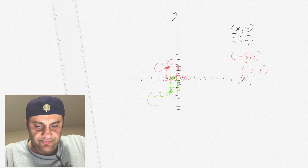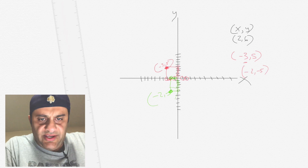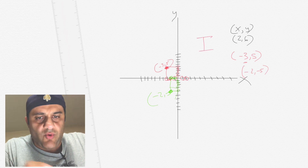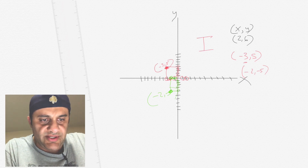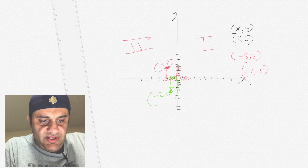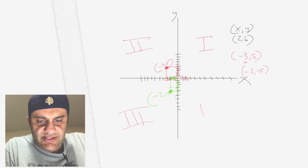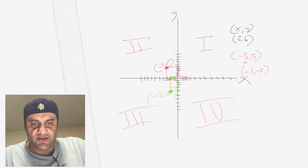They also have what are called quadrants — the plane is split into four. On the top right, that's the first quadrant. This is the second quadrant. They go counterclockwise. This is the third quadrant, and this is the fourth quadrant.